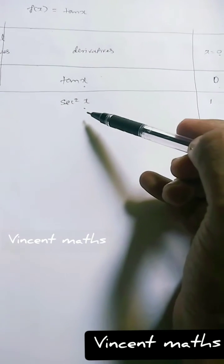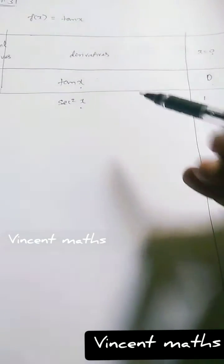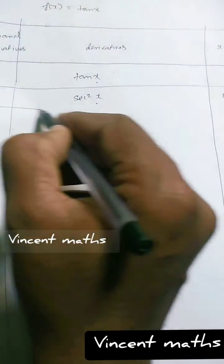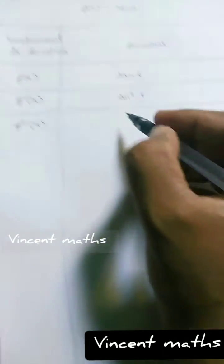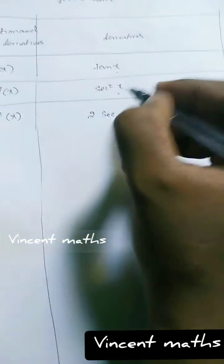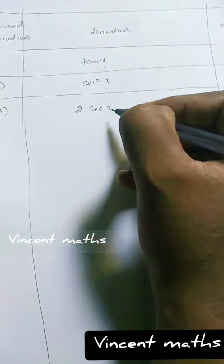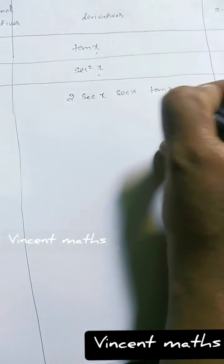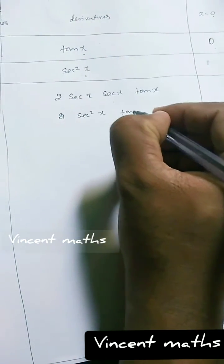How is sec(0)? We know that cos(0) = 1, so sec(0) = 1, and sec²(0) = 1. So f'(0) = 1. Next, f''(x): we differentiate sec²x. That gives 2·sec x · sec x · tan x, which is 2·sec²x · tan x.